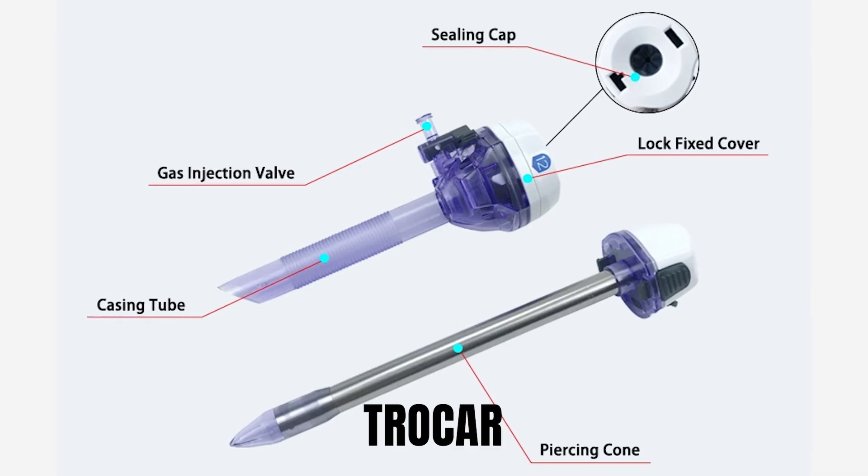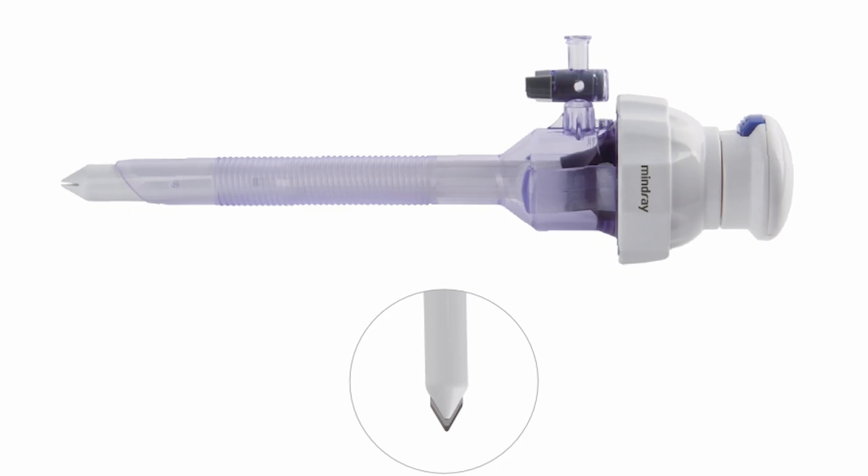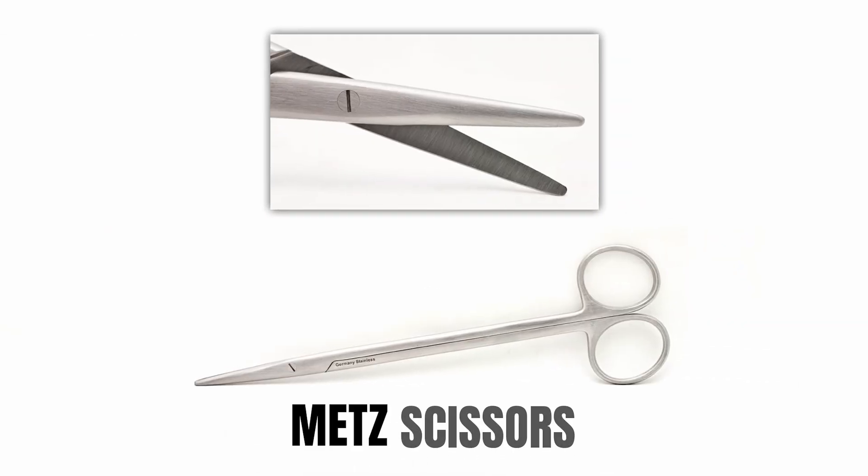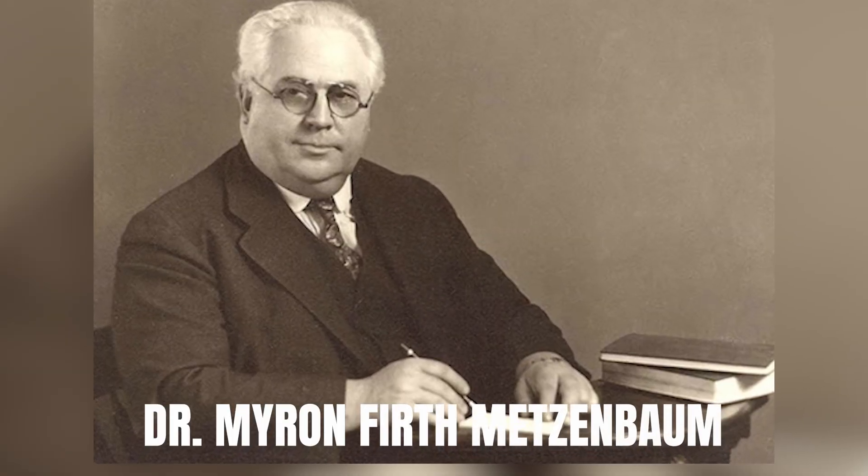Trocar is a device for inserting laparoscopic instruments. The word comes from the French word trocarte, which basically means three sides. If you've looked closely at the disposable trocars used in laparoscopic surgery, there's often a three-sided triangular shape to the tip of the trocar. Metzenbaum scissors — also called Metz scissors — are used for cutting fine tissue. This is a combination name instrument named after Dr. Myron Firth Metzenbaum, who was an American surgeon.